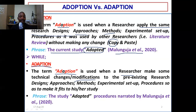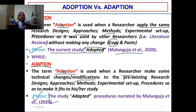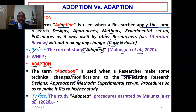If you find a phrase like 'the study adapted procedures narrated by Malunguja et al., 2020,' compare this with phrase one: 'the study adopted.' If you are not aware of the difference, you can confuse yourself. The first phrase indicates the methods were adopted — taken as they were. In phrase two, the method was adapted — taken but with some modifications so that it could fit into the researcher's study.